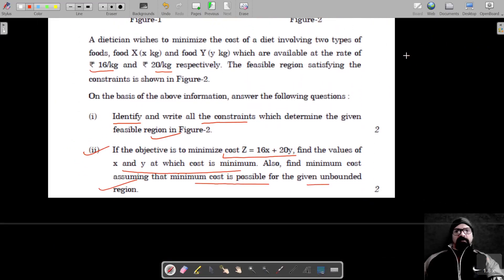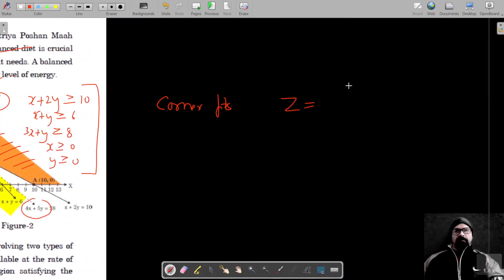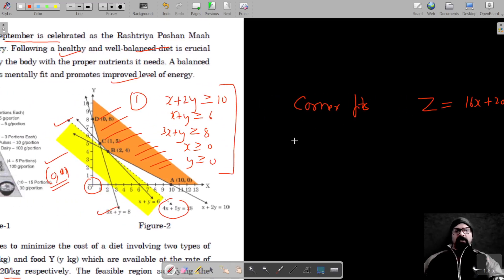The objective function Z is 16x + 20y. Our corner points: the first one is A, which is (10, 0). Next one is B, (2, 4). After that it's C, (1, 5), and then it's D, (0, 8).